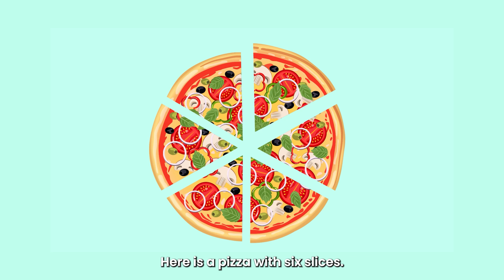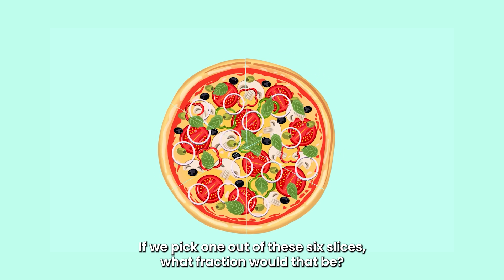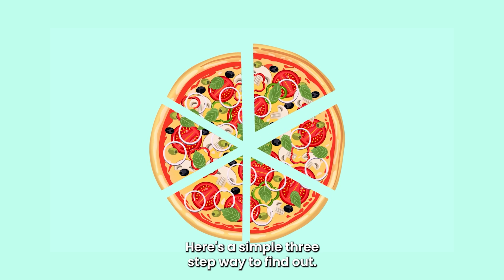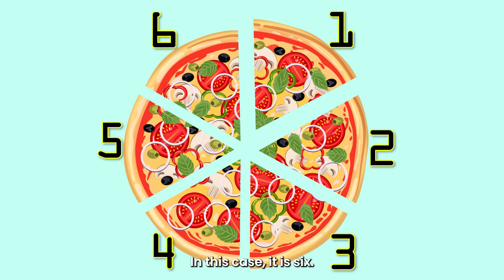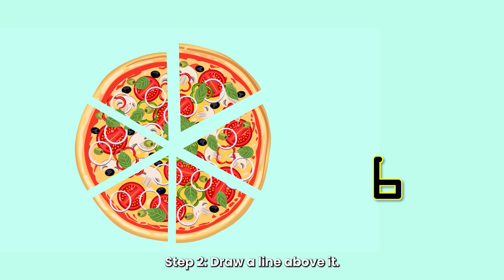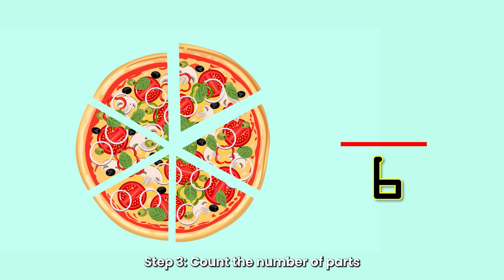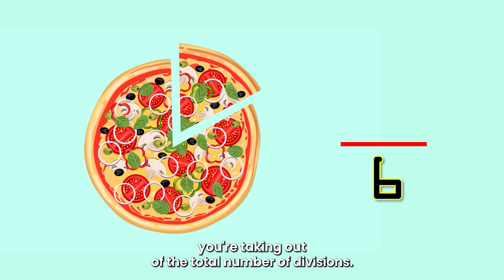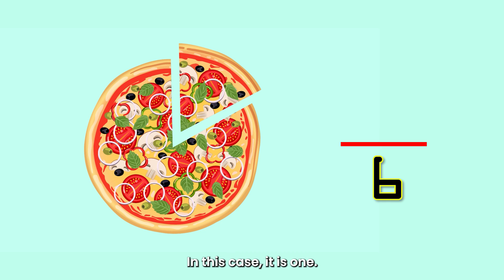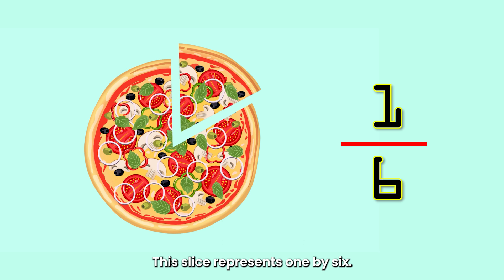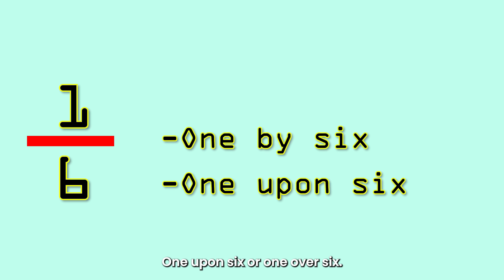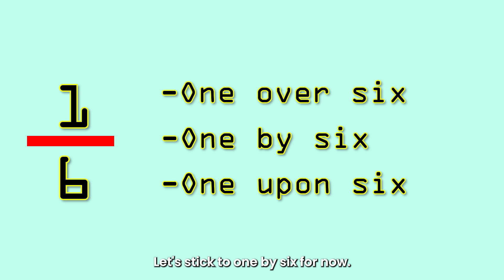Here is a pizza with 6 slices. If we pick one out of these 6 slices, what fraction would that be? Here is a simple 3-step way to find out. Step 1: Count the total number of divisions made to any quantity — in this case, it is 6. Write it down. Step 2: Draw a line above it. Step 3: Count the number of parts you are taking out of the total — in this case, it is 1. Write it above the line. This slice represents 1 by 6, also called 1 upon 6 or 1 over 6.